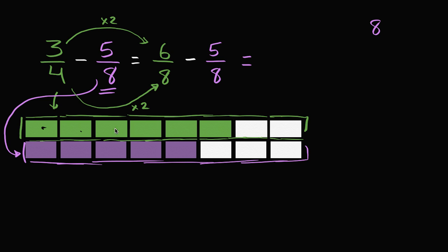I have 1, 2, 3, 4, 5, 6, 7, 8 equal sections. And we see that 6 of them are shaded in. That 3/4 is the same thing as 6/8.